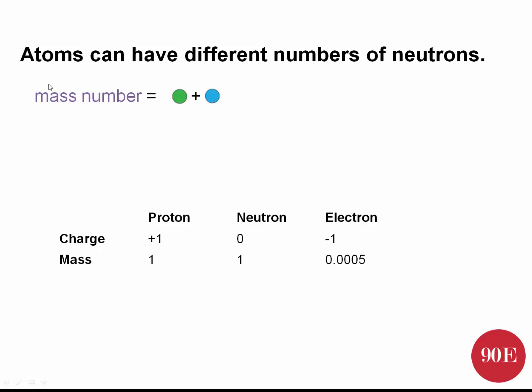So if you know the mass number and you know the atomic number — which is the number of protons — you can work out the number of neutrons. But where do we get that information? How do we work out the atomic number and the mass number of an element?